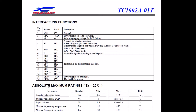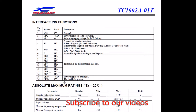Here it is given in much more detail — these are the interface pin functions. 0V is ground, plus 5V is the power supply, and there is an adjusting supply voltage for LCD driving. Register select: 1 is for data register, 0 is for instruction register. Read/write bar: high is read, low is write. The enable signal is for writing or reading data. This is the 8-bit bi-directional data bus. This is the power supply for the backlight, and 0V is for the backlight cathode.